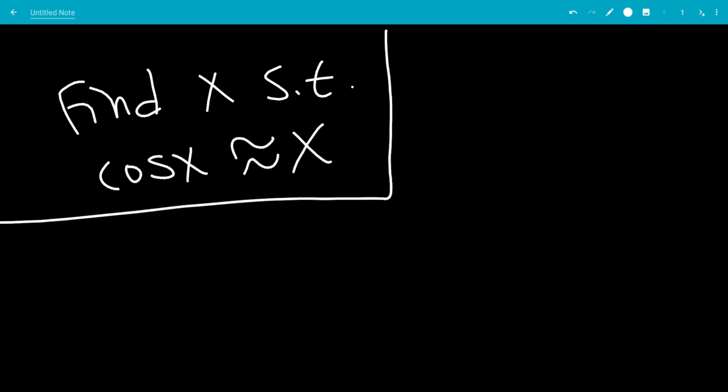In this video, we're going to find x such that cosine x is approximately equal to x. And we're going to use Newton's method.